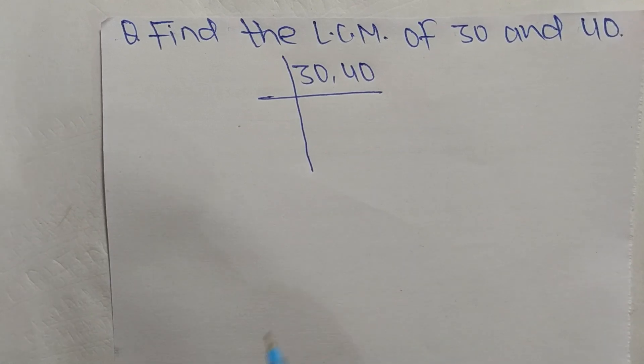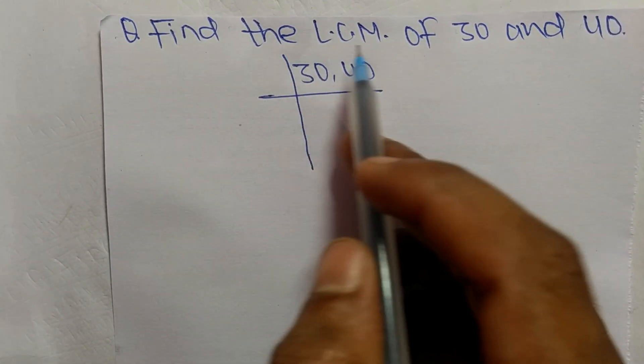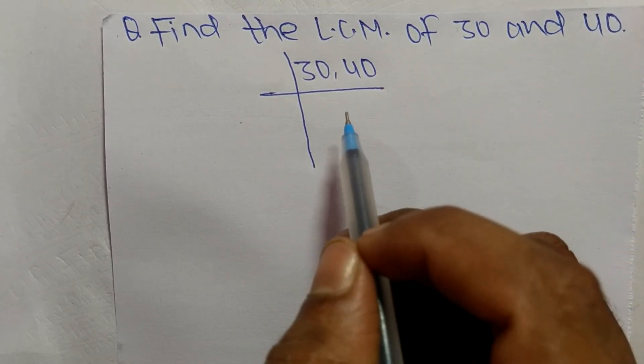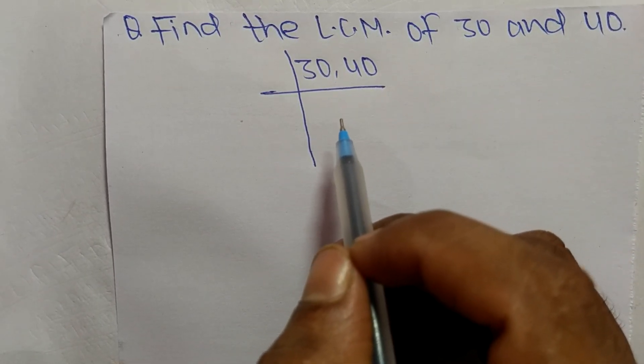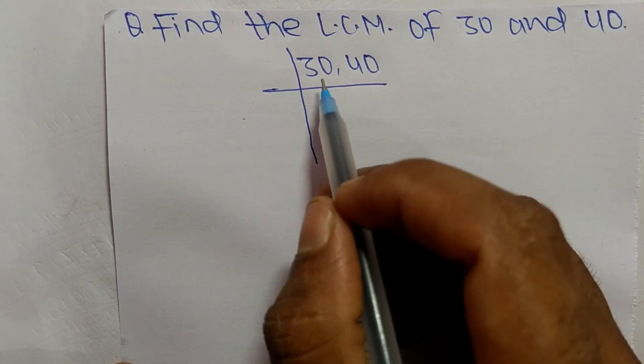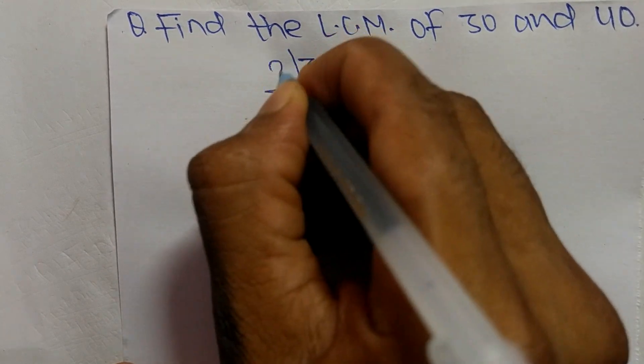So today in this video we shall learn to find the LCM of 30 and 40. To find LCM, first we have to choose the lowest number that can exactly divide 30 and 40. So the number is 2.